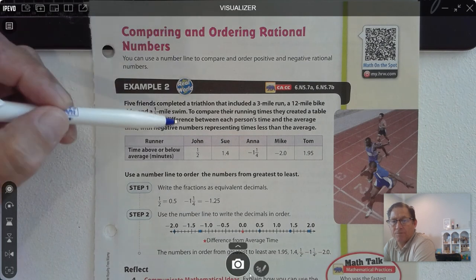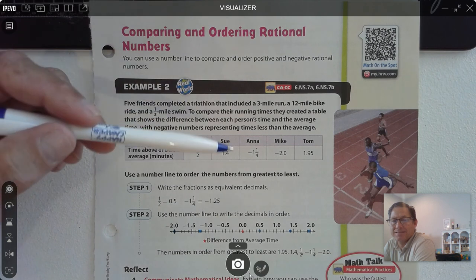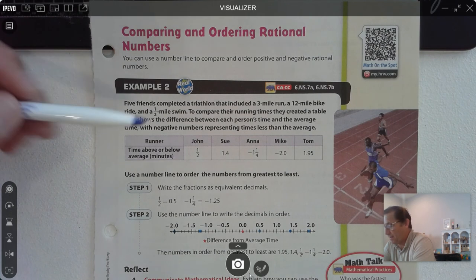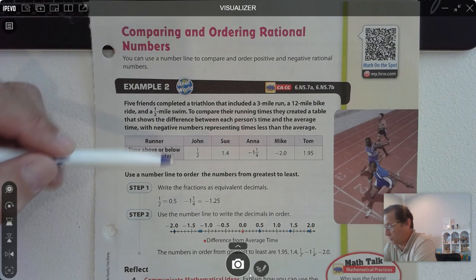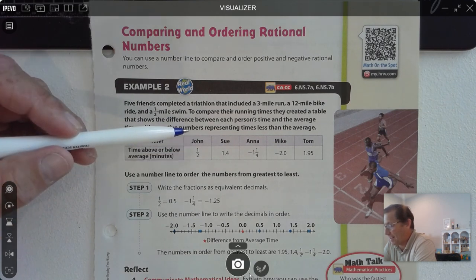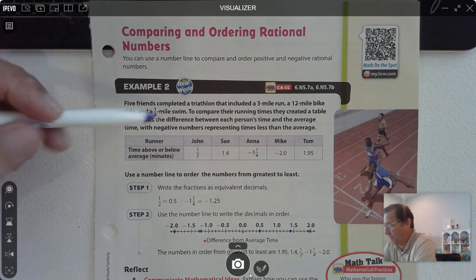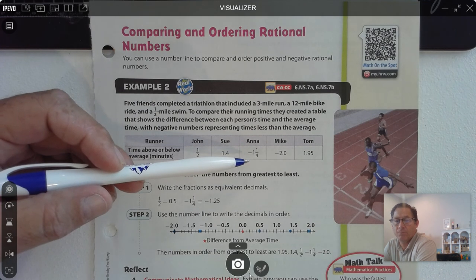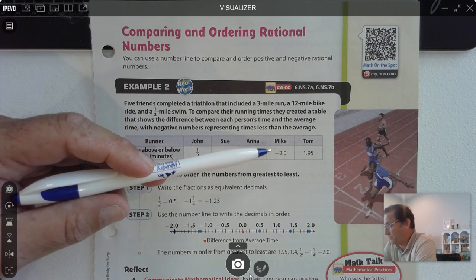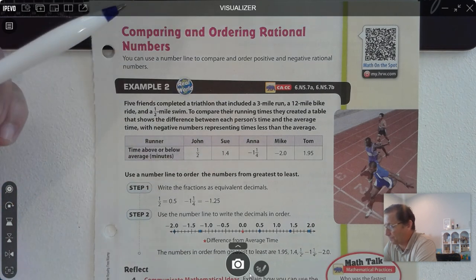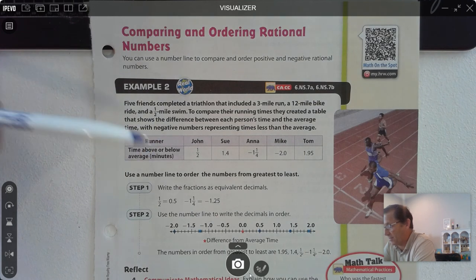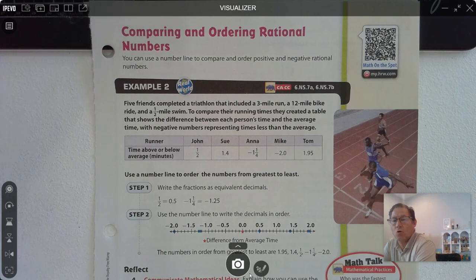When we talk about running speed, if your time is less than the average, you're actually quicker than the average runner — you finished before the average runner. Time above or below average in minutes: John finished half a minute after the average runner. Sue was 1 and 4 tenths above. Anna was below the average by 1 and 1 fourth minutes. Mike was 2 minutes below, meaning he was 2 minutes faster. And Tom was 1 and 95 hundredths over the average runner.